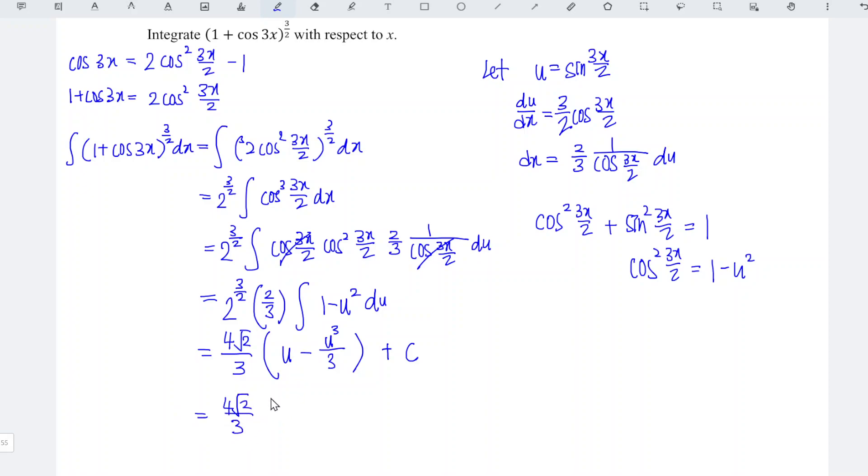So this is equal to 4 square root of 2 over 3 times sine 3x over 2 minus 1 over 3 sine cubed 3x over 2 plus constant C.